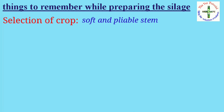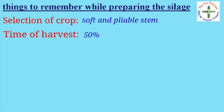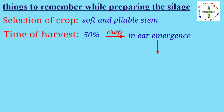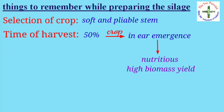Second is the time of harvest. Crop should be harvested when 50 percent of the crop is in the ear-emerge stage, as at this stage the crop will be nutritious as well as have high biomass yield.